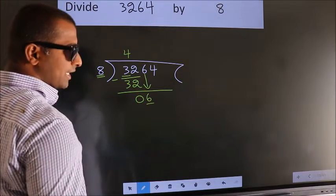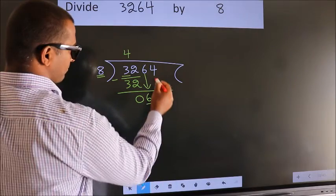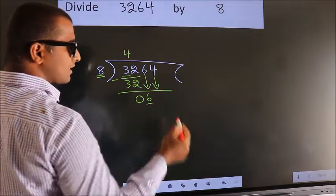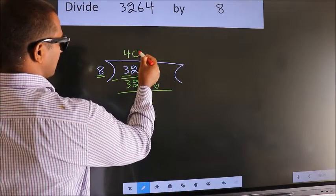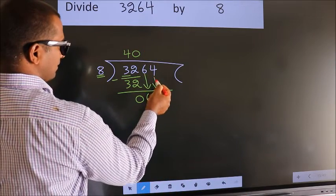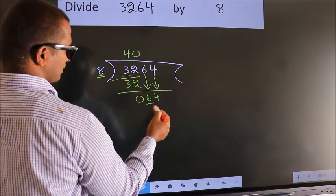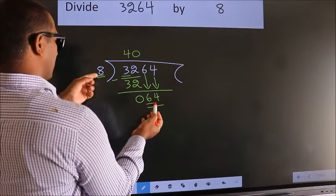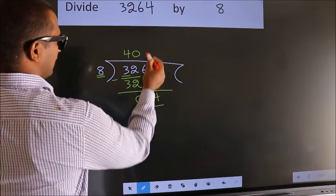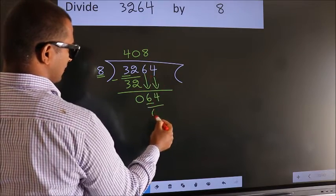So, we should bring down the second number. And the rule to bring down second number is put 0 here. Then only we can bring down this number. So, 64. When do we get 64? In 8 table. 8 eights, 64.